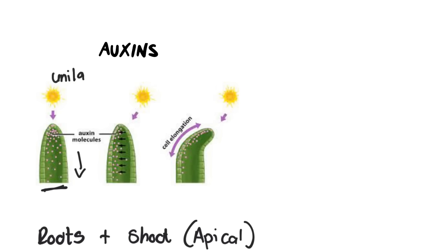Unilateral light is a really important term for understanding this topic and exam questions on it. Unilateral means the light is coming from above or evenly from all directions — in other words there's no shadow and no dark side. But if we move the light source over to one side, it does something to the auxins: it actually pushes them over to the dark side, and as you can see here they all migrate over to the dark side. This change in auxin distribution impacts cell elongation and causes the stem to bend so it can face the light.